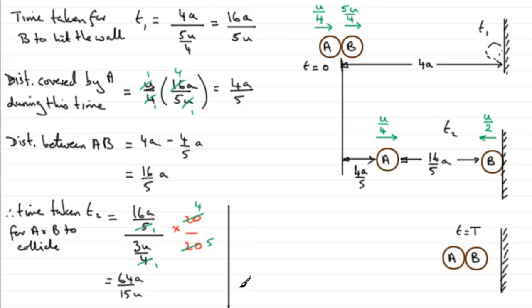So to get the total time big T here, we can say that therefore big T equals t1 plus the time t2. We know the time t1, it was 16a over 5u. And we can turn these into 15ths by multiplying top and bottom of this fraction by 3. So you end up with 48a over 15u. And we can add it to the 64a over 15u, giving us that final total that we had to show, 112a all divided by 15u.